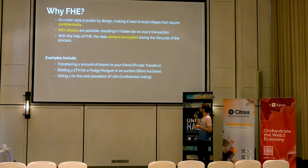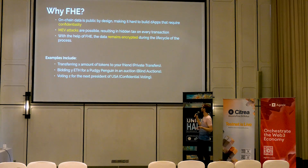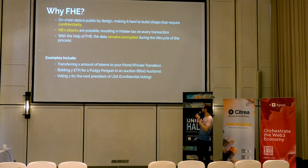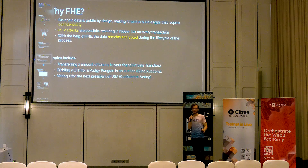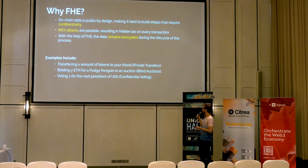Examples include transferring X amount of tokens to your friend — what you'd call private transfers — or bidding Y ETH for a Pudgy Penguin in an auction, or voting Z for the next president of the USA. As you can see, those data remain encrypted, and that's how homomorphic encryption works. You can process data and perform computations without decrypting it.